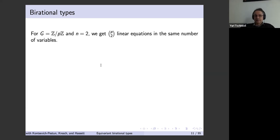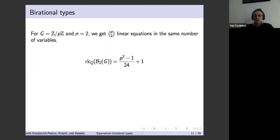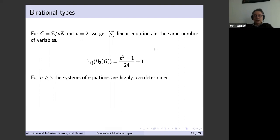After a lot of combinatorics, if we forget about geometry and just look at the generating relations — a system of linear equations — for n=2 (dimension 2), the Q-rank of the group we defined is (p² - 1)/24 + 1. We verified this for Z/5Z and Z/7Z. This is very interesting, especially the factor of 24. Then we looked at what happens for n ≥ 3.